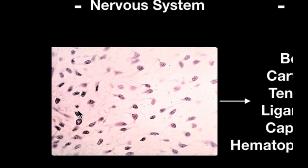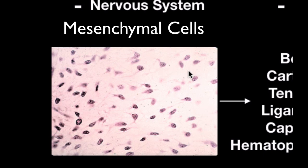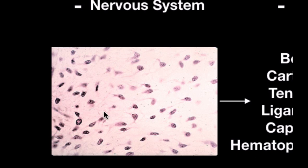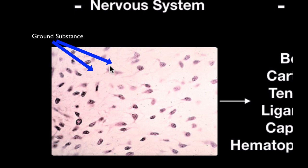If we zoom in on that picture, you'll see different nuclei — all those dark spots are nuclei, and all those cells are called mesenchymal cells. When you look at them under the microscope, mesenchyme has cell processes that form a network with each other. That network is called the syncytium. You can also see what we call a ground substance between the cells — it's not going to be empty space.